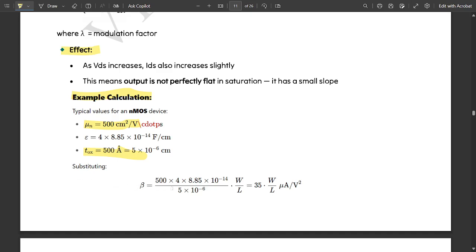By substituting the value in the equation, that is beta, here they have asked us to find the value of beta. If you substitute the values and find the value of beta, we would be getting around 35 into W by L micro ampere per voltage square with respect to the value, whatever value you give to the width and length, the answer we would be getting for beta.